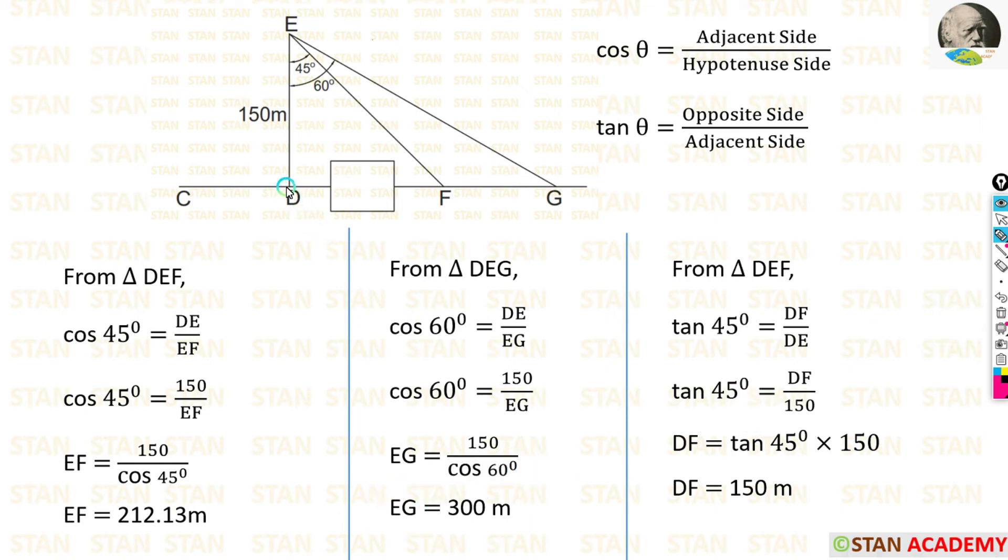Next I am going to find out the distance DF. For calculating the distance DF, I am going to take the triangle DEF. In the triangle DEF, I am going to apply tan θ formula. Tan θ equals opposite side by adjacent side. In the triangle DEF, for 45 degrees the opposite side is DF, adjacent side is DE. So tan 45° = DF/DE. We already know the value of DE, 150 meters. We can apply here. Then we can take the 150 on the left side, it will go in the numerator. Finally we are getting DF equals 150 meters.